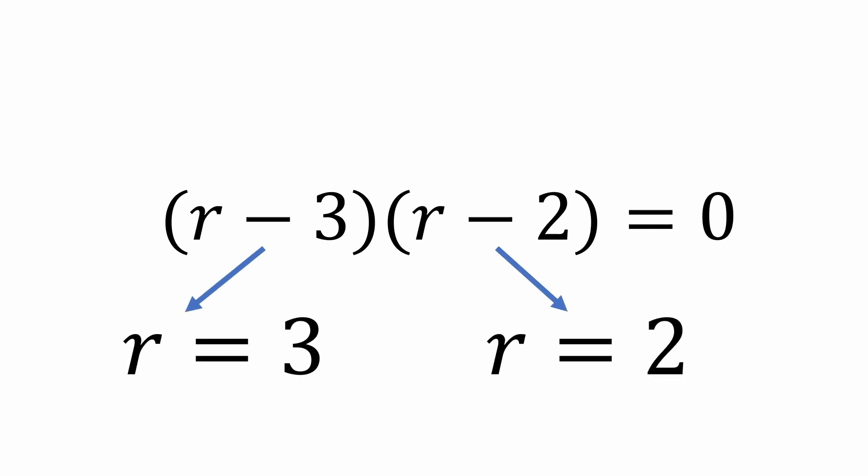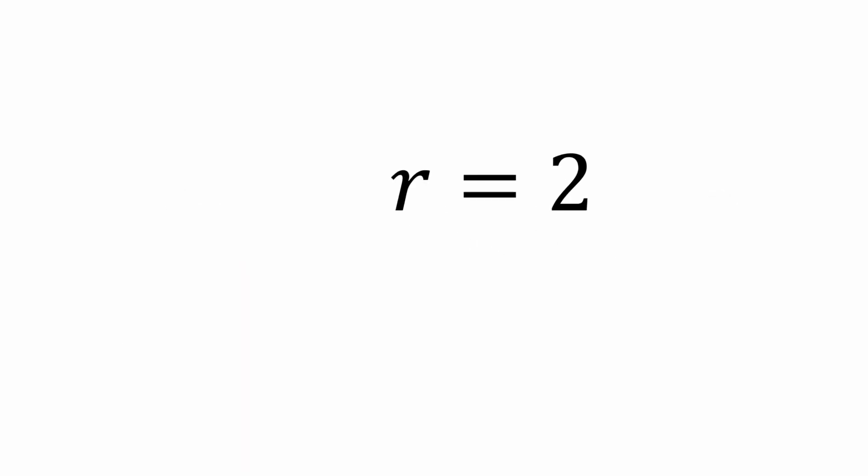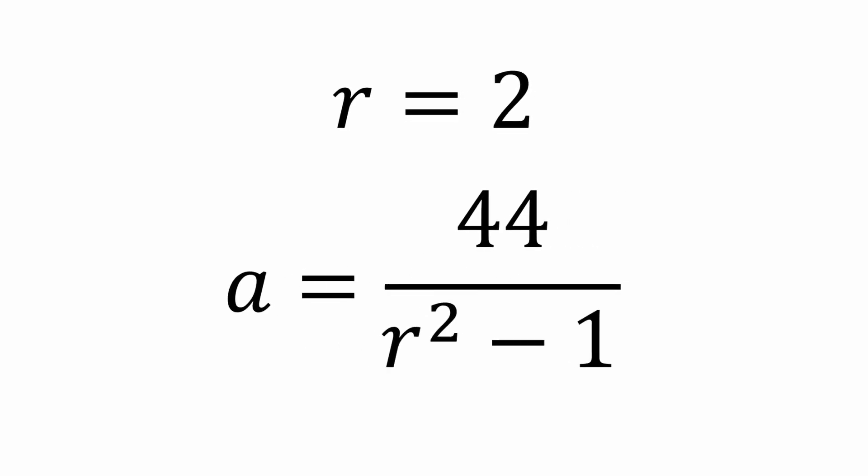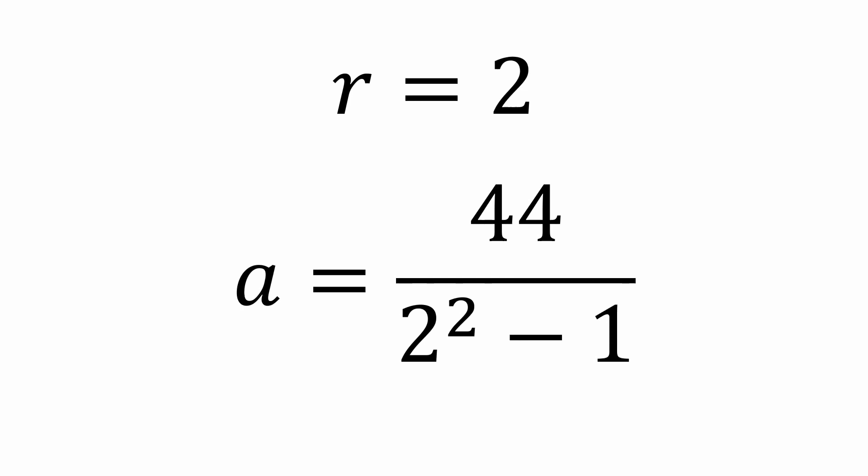Let's start with r equals 2 and see what our term values are. Recall that earlier we had the following equation. Now let's solve it for a and plug 2 in for r. We can calculate a to be 14 and 2 thirds.